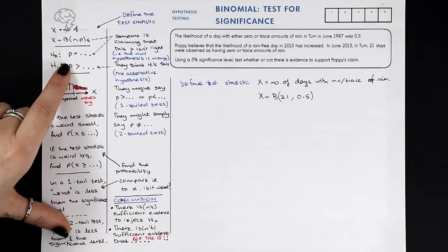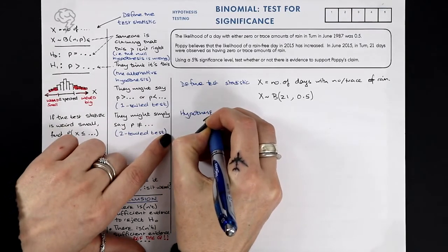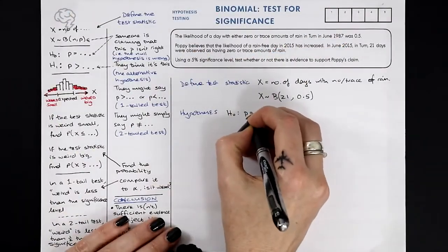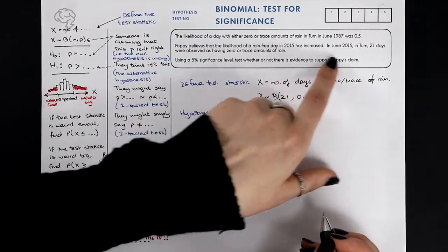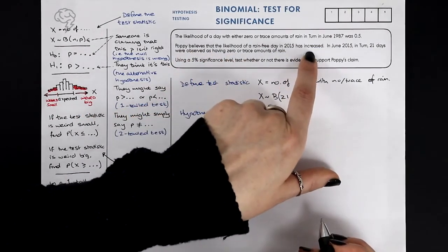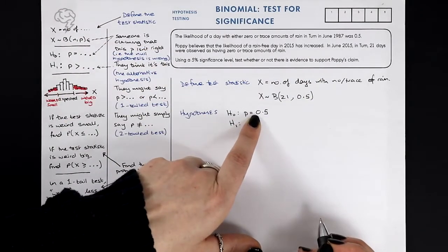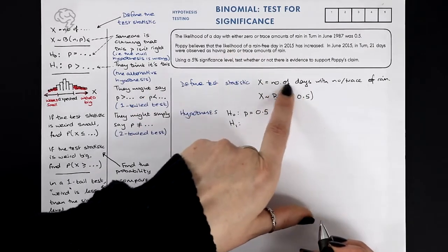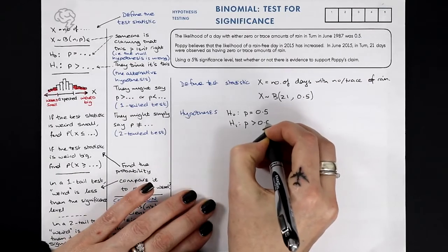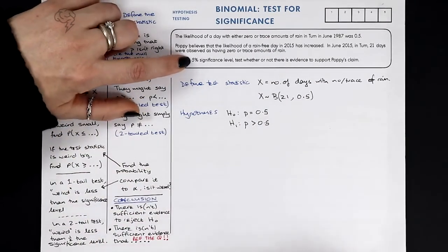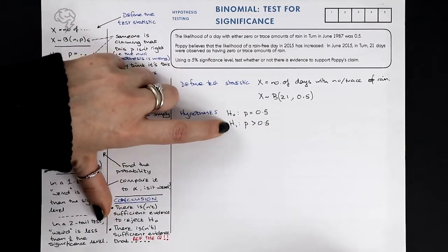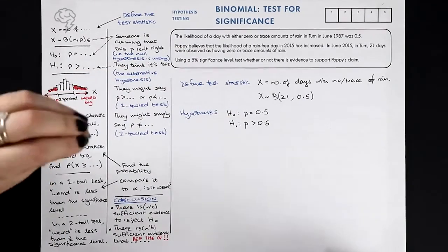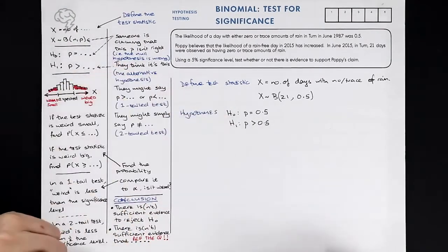Now let's look at our hypotheses. The null hypothesis is that nothing has changed: p equals a half, just as it was before. The alternative hypothesis — Poppy believes the probability has increased, so she thinks p is more than a half. She thinks the likelihood of a rain-free day has increased. So she is saying p is bigger than a half — that's a one-tailed test, which means my five percent really truly is five percent. To reject H-naught we need to be in the top five percent of weirdness.